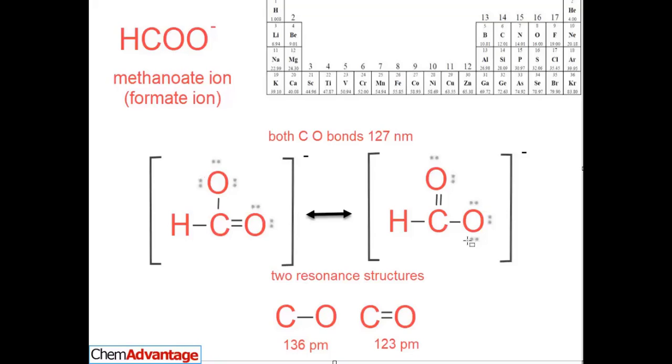Now, the interesting thing about this experimentally: typically a carbon-oxygen bond will be 136 picometers. And a double bond, because of this extra pair of electrons pulling these guys in together with a little bit more force, is closer together, a stronger bond, 123 picometers.